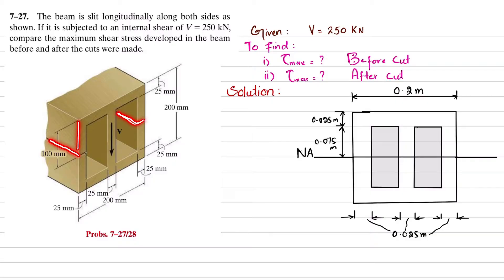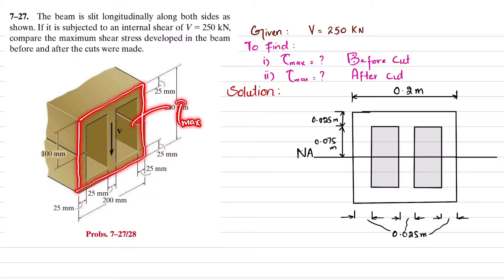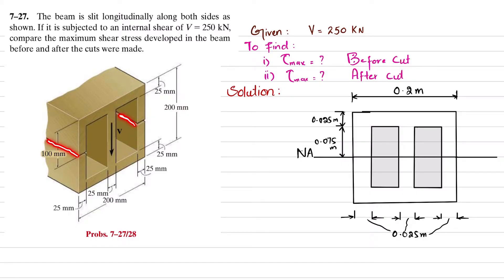We will assume this as a single piece and find the maximum shearing stress before the cut. Then, based on the cut, we will find the maximum shear stress for that cross section of the beam after the slit. Let's start with the solution.